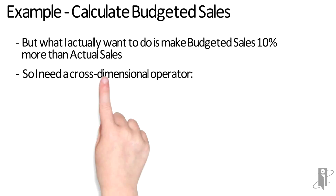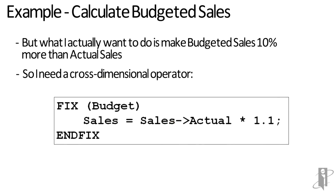To do this, I'm going to need a cross-dimensional operator. So instead of just saying sales equals sales times 1.1, I'm going to say sales equals sales cross-dim — that's a little dash greater-than — sales equals sales->actual times 1.1. So even though I'm calculating the budget slice and it's going through all of the iterations of various markets and time periods for budgeted sales, it's getting the value from actual sales.